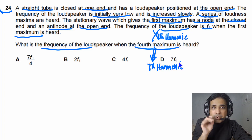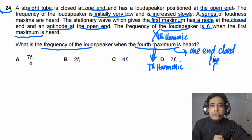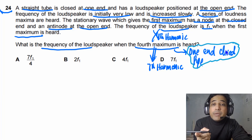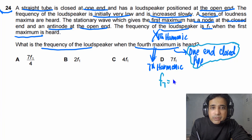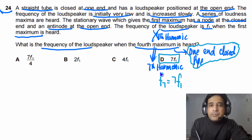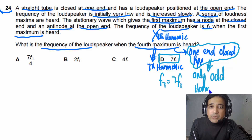We are talking about a one-end-closed pipe. In this pipe, only odd harmonics are produced — this is a very important property. So we need to find the frequency of the 7th harmonic, which equals 7 times the fundamental frequency f1. Based on this, the answer for this question is D.